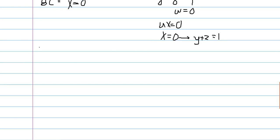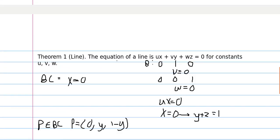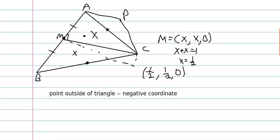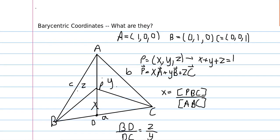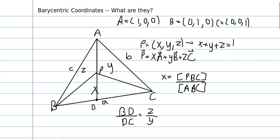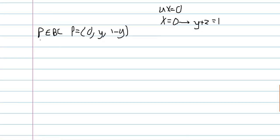So for any point p on BC, we know that p is equal to 0, y, 1 minus y. And furthermore, we know that the y here will be... we will have ratios y and 1 minus y. So furthermore, we know that pc over bc is equal to y.